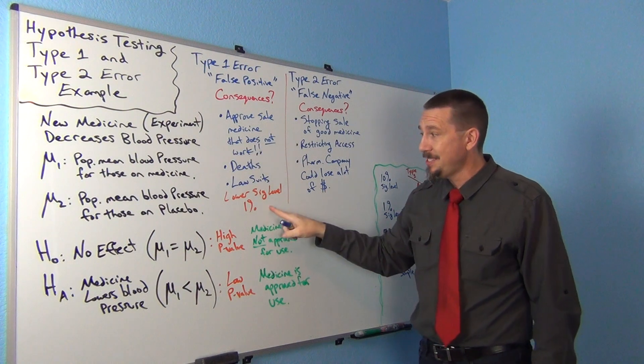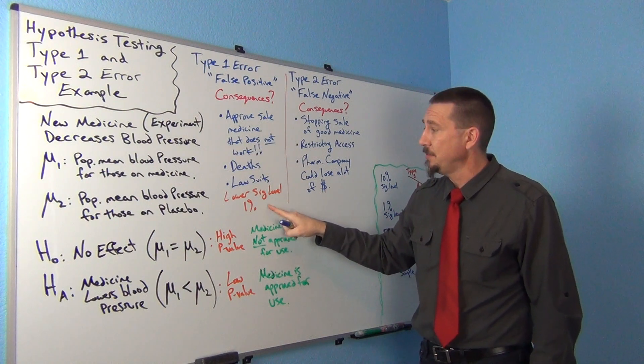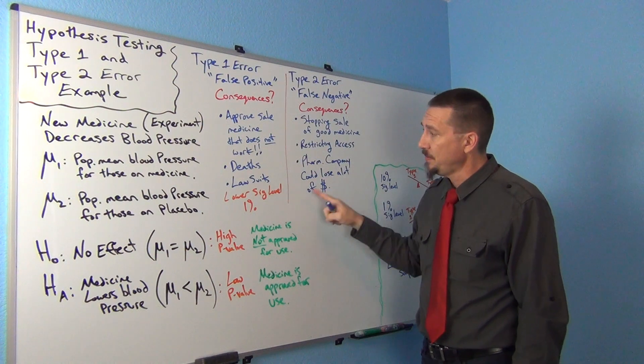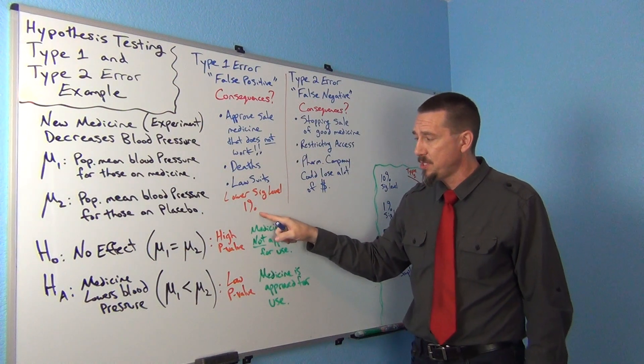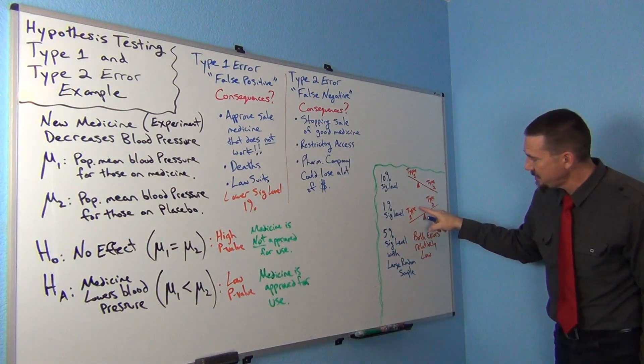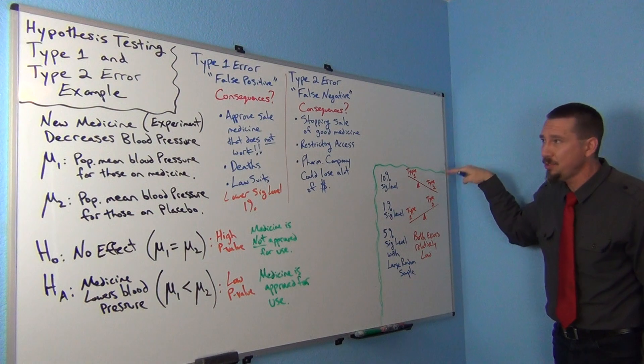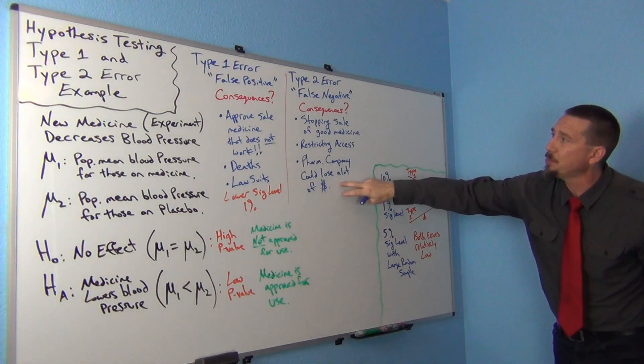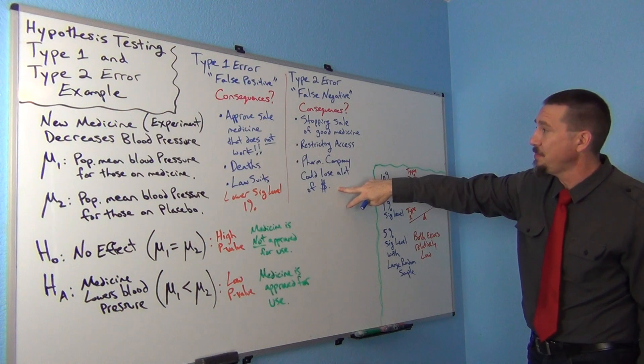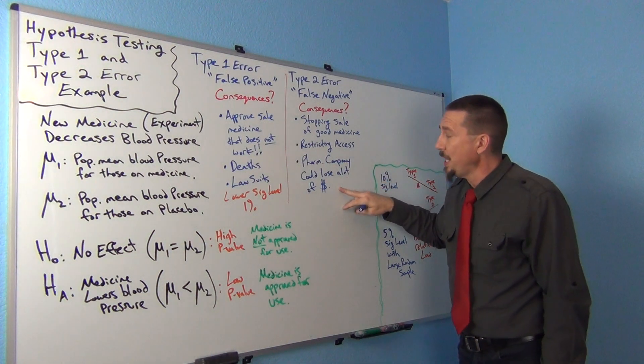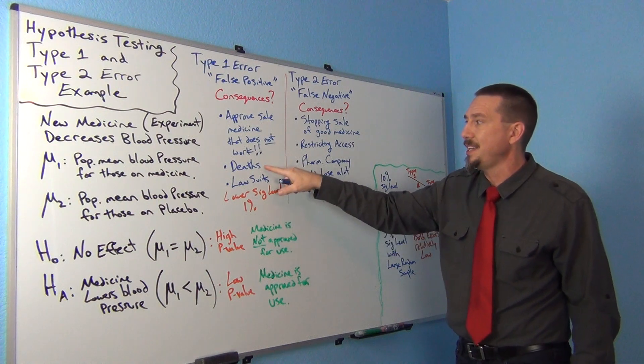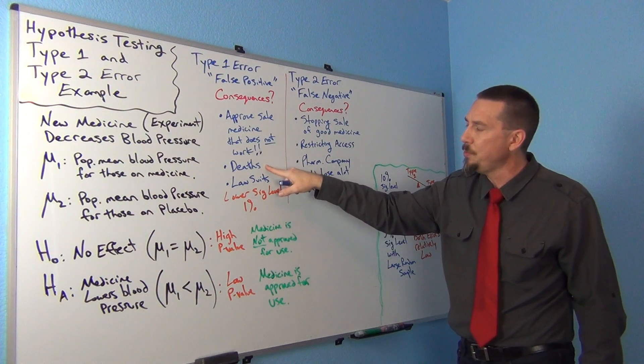So I'm going to stay with my 1% significance level. If I lower my significance level to 1%, remember they're on a seesaw. At 1% significance level, Type 1 goes down but Type 2 starts to go up, so you have a higher probability of Type 2. But I'm not going to change my significance level. I'm going to leave it very low because I don't want deaths. Type 1 is the one I really need to address.